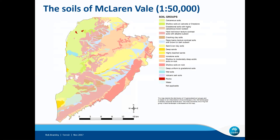I use McLaren Vale purely as an example — there's no intention to focus on it for any obscure reason. This map shows the results of a very concerted mapping effort conducted by the South Australian state government's soil and land mapping program over about the last 30 years. That program generated soil maps at a scale of 1:50,000 over the agricultural producing areas of South Australia. In the course of that activity, they characterised 28,000 soil profiles statewide.